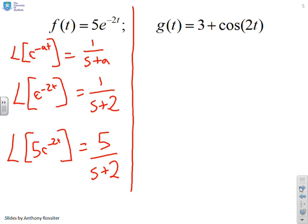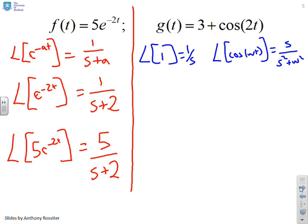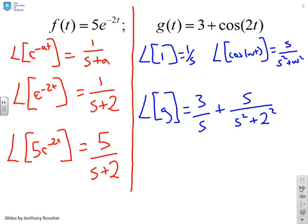What about the next one? Well, for this one you'll remember that Laplace of a constant is 1 over s and Laplace of cos omega t equals s over s squared plus omega squared. So if I use those two results together then Laplace of g is going to have to be 3 over s because I had 3 rather than 1 and then I'm going to get plus s over s squared plus 2 squared because in this particular case the omega is 2.